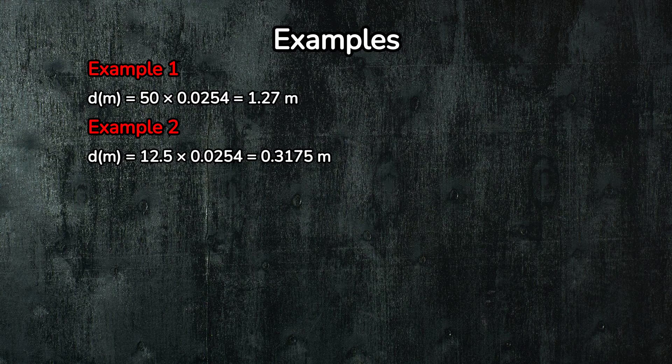Alright, let's see how this works with a practical example. Example 1: Imagine you have a piece of wood that's 50 inches long and you need to know its length in meters. Here's the simple formula you'll use: length in meters equals length in inches times 0.0254.